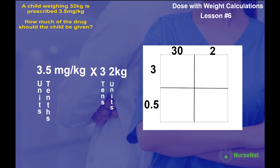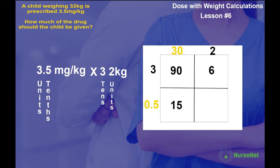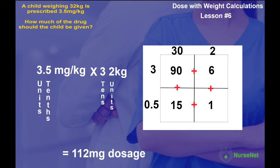Multiplying them together: 3 multiplied by 30 gives 90; 3 multiplied by 2 gives 6. Moving on to the decimals: 0.5 multiplied by 30 gives 15, and 0.5 multiplied by 2 gives 1. Adding them all together: 90 plus 6 plus 15 plus 1 equals 112 milligrams total dosage.